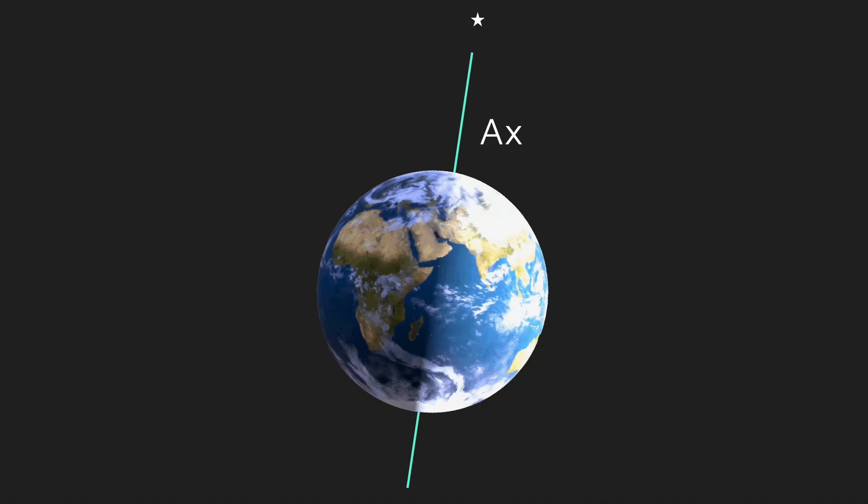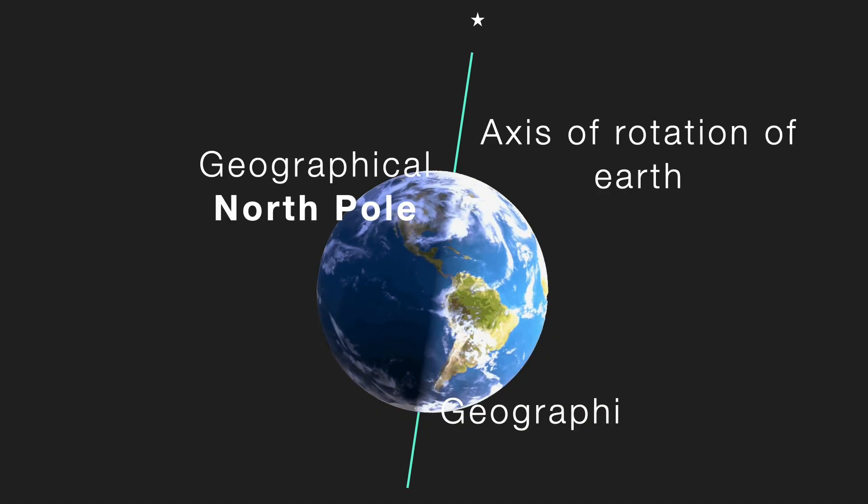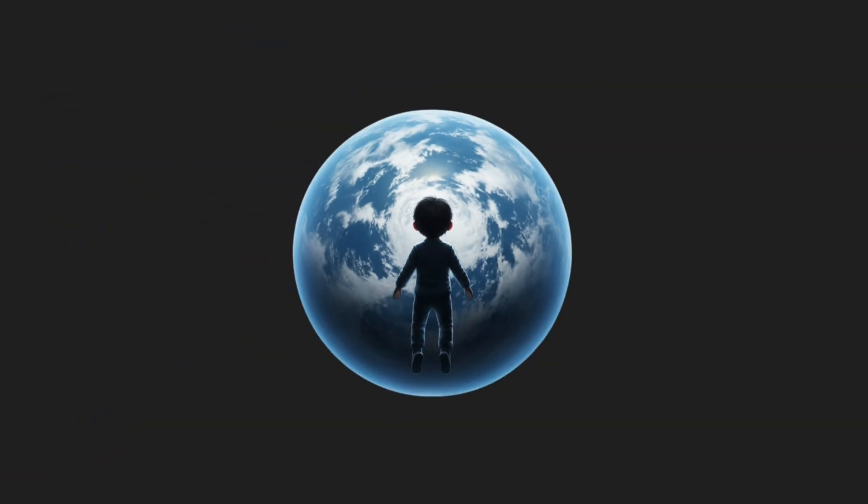As you can see here, Earth rotates on its own axis. The axis of rotation of the Earth passes through the geographical North Pole and South Pole.